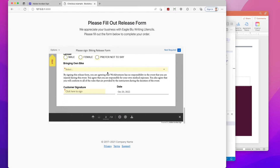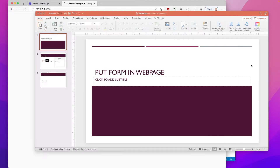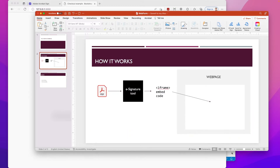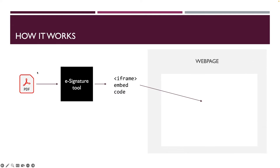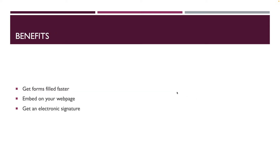Just to explain a little bit of how that actually works, I'm going to go back into my PowerPoint. What you do is you can upload your PDF to Acrobat Sign and then it will give you that iframe code that you can simply put in your web page. The benefit is it helps you get forms filled faster, you can embed it onto your web page, and you can capture electronic signatures.